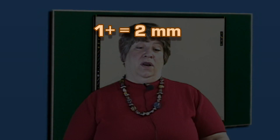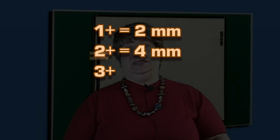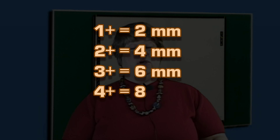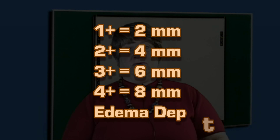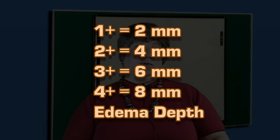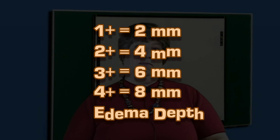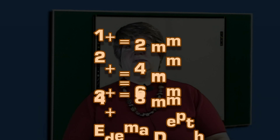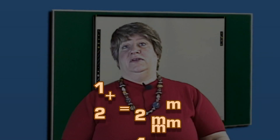We also need to assess for the presence of edema. With regard to edema: one plus edema equals a depth of two millimeters, two plus edema equals a depth of four millimeters, three plus edema is a depth of six millimeters, and four plus edema is a depth of eight millimeters. Edema may also be described as generalized versus localized to a specific area of the body.